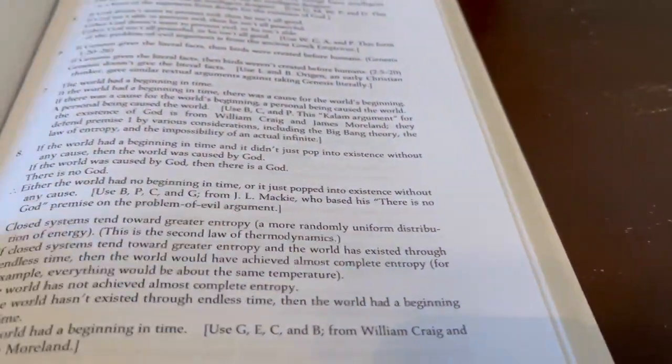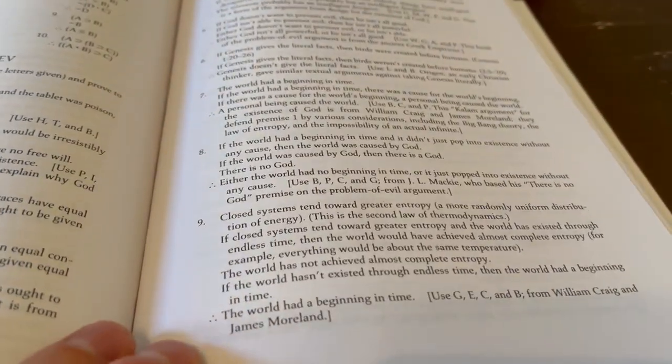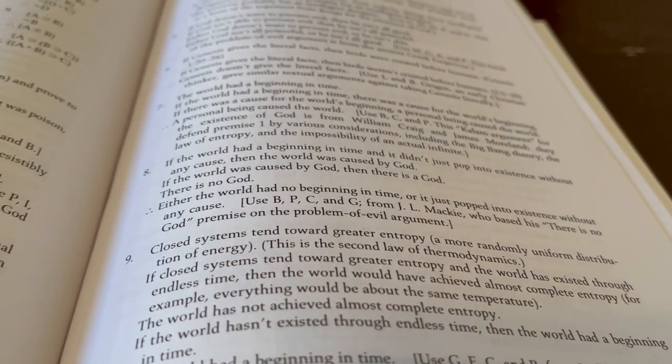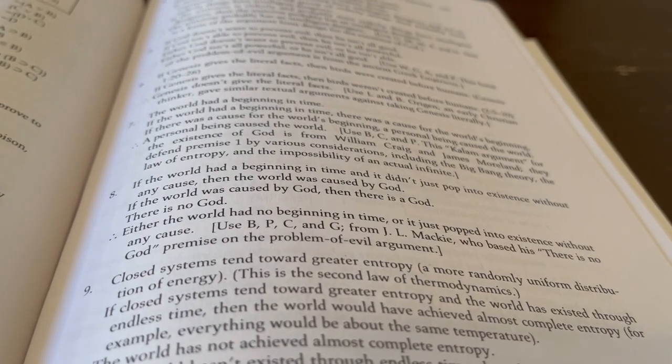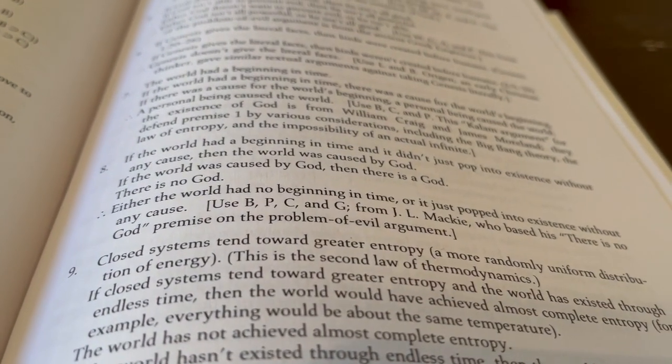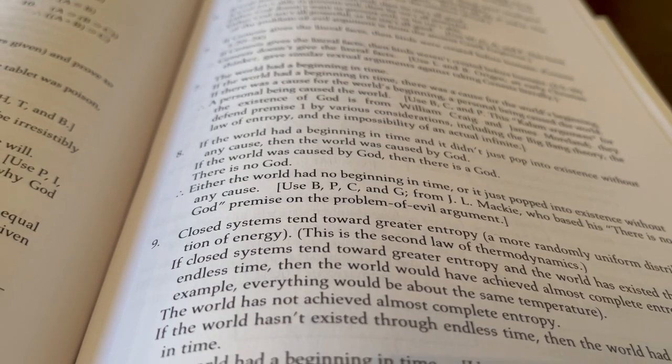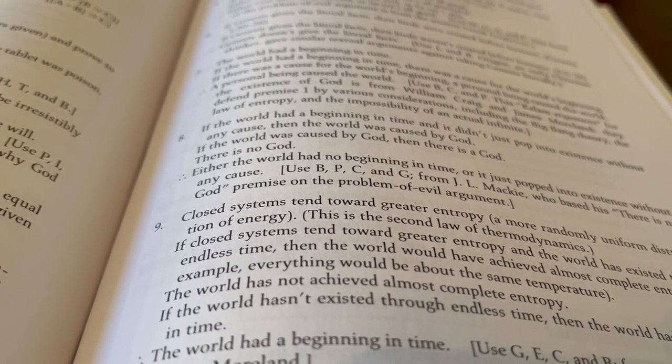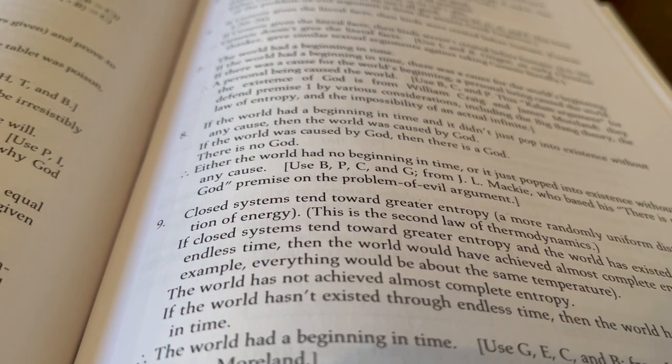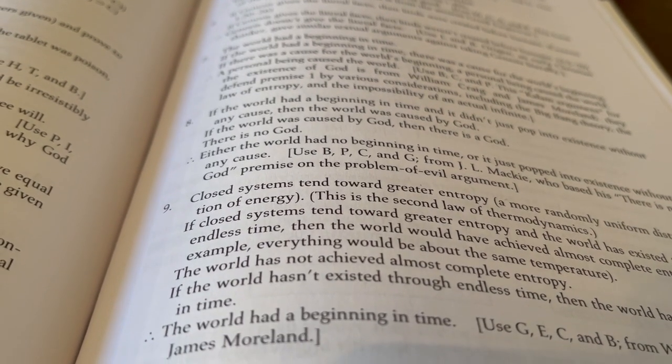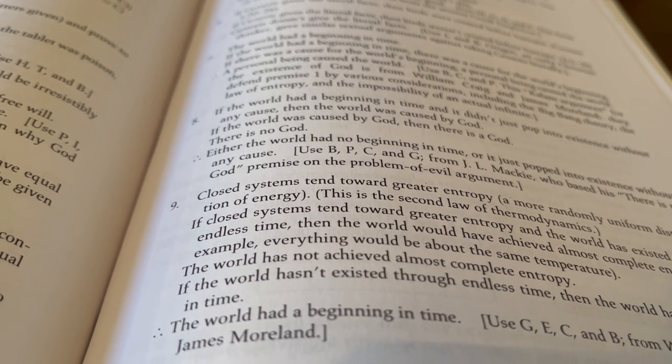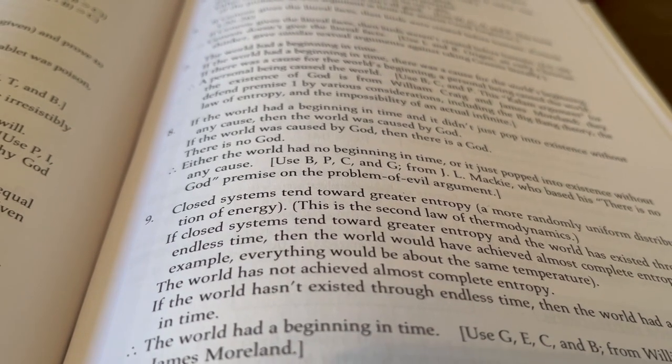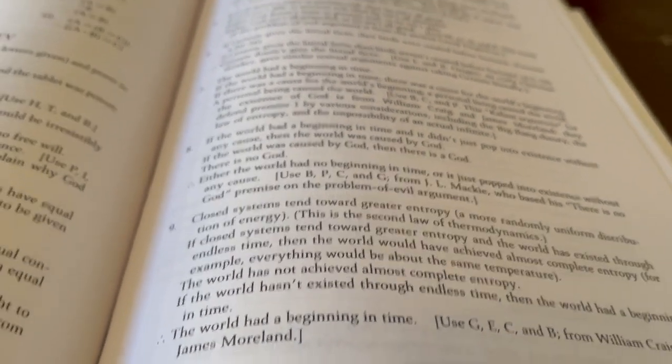Let me show you, for example, just randomly, some exercises. These are concrete arguments. So it's not just a game of manipulating arbitrary symbols. So for example, let's say number 8, we have if the world had a beginning in time and it didn't just pop into existence without any cause, then the world was caused by God. If the world was caused by God, then there is a God. There is no God. Therefore, either world has no beginning in time or just popped into existence without any cause. So that is an argument we can analyze with propositional logic.